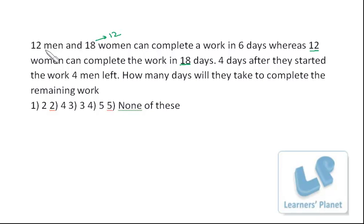That means the remaining 50% of the work is being done by 12 men. That means 12 men are equivalent to 18 women, or we can say one man is 3 by 2 women. Capacity or capability of one man is equivalent to 3 by 2 women. That means this total combination is of 18 women, which equals 24 men.